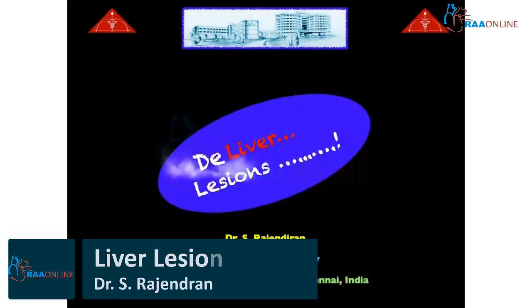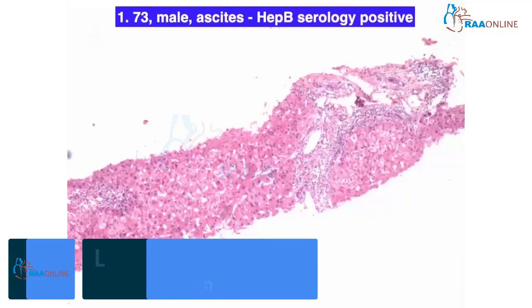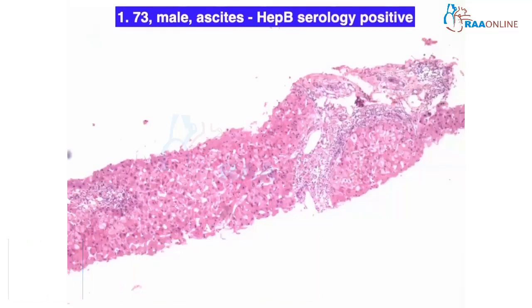Let us discuss some liver lesions. Case 1: 73-year-old male with ascites, Hepatitis B serology positive. What will be your working diagnosis? With Hepatitis B serology positive, you will think of more...